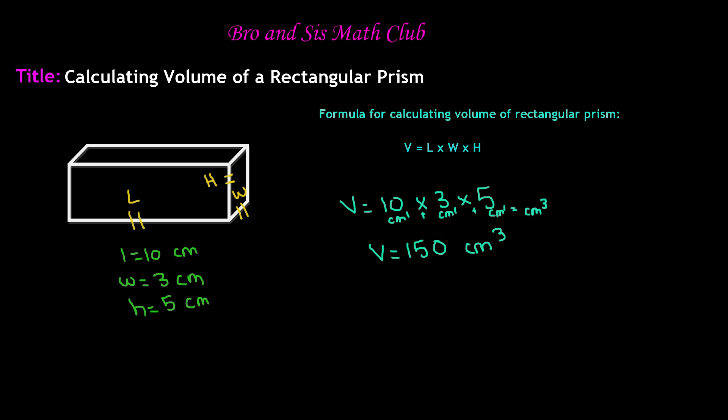It doesn't matter. It doesn't only have to be centimeters. It could be inches, millimeters, meters, or whatever unit you're using. The volume of this rectangular prism is 150 centimeters cubed.